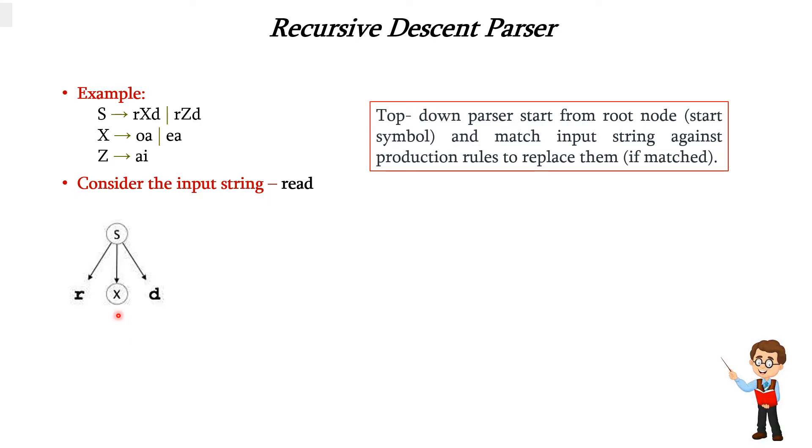Now we can expand this non-terminal, that is X, in the next step. This X can be expanded with the first rule of X. The first rule is oa. So we are using oa here. But our input string is 'read'. But we are getting 'road'. It is not correct. It is not matching.